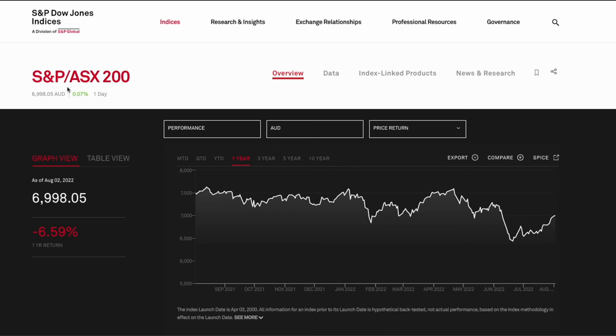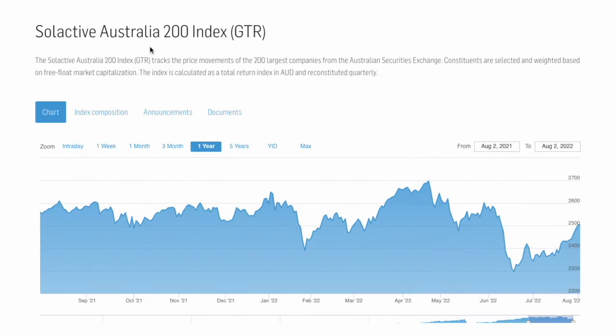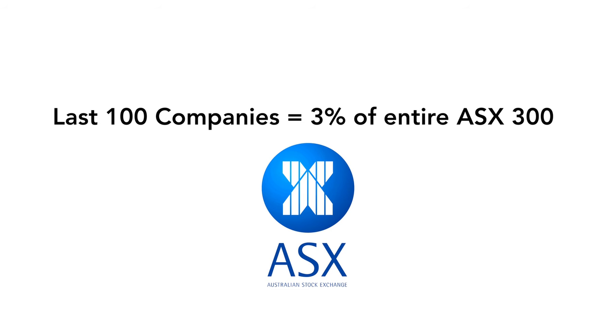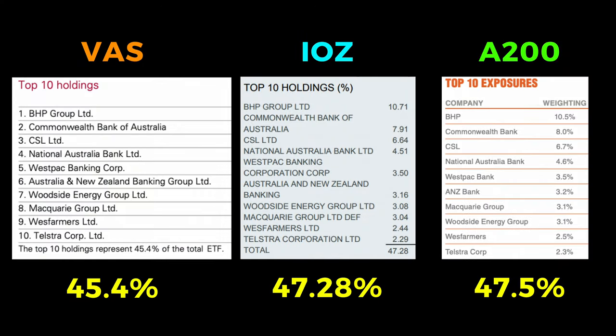Both IOZ and A200 track the top 200 index. However, IOZ tracks the S&P 200 index while A200 tracks the Solactive Australia 200 index. VAS tracks the S&P 300, which just adds an extra 100 companies. It should be noted that the last 100 companies only make up about 3% of the entire holdings. And if we look at the top 10 holdings for each fund, they are identical except for the weighting. So performance-wise, all three should be very similar.